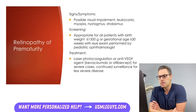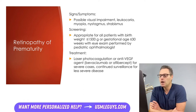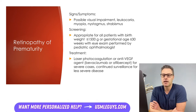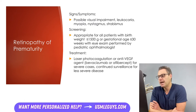When it comes to signs and symptoms, you might see visual impairment, leukocoria, myopia, nystagmus, and even strabismus. The diagnosis and classification is made by a pediatric ophthalmologist using a dilated eye exam to document the location and extent of the condition. All patients born with a weight of 1,500 grams or less, or with a gestational age of 30 weeks or less, should undergo screening with several eye exams. Treatment involves laser photocoagulation or the administration of an anti-VEGF agent such as bevacizumab for severe cases, with continued surveillance for less severe disease.